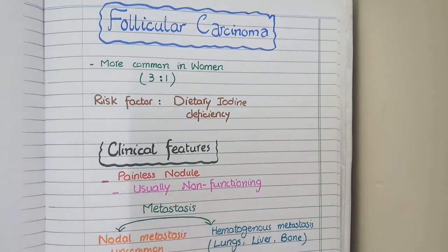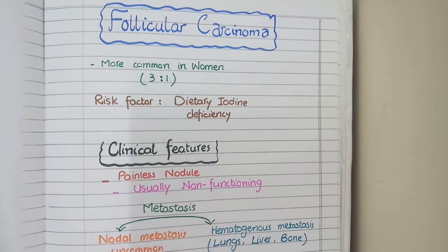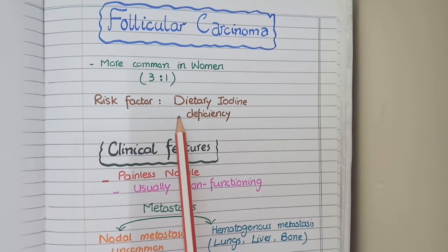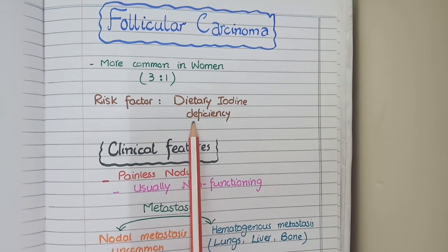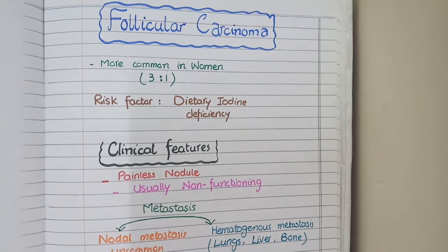Now regarding follicular carcinoma: it is three times more common in women than in men. A risk factor for follicular carcinoma is dietary iodine deficiency, which is also a risk factor for goiter.